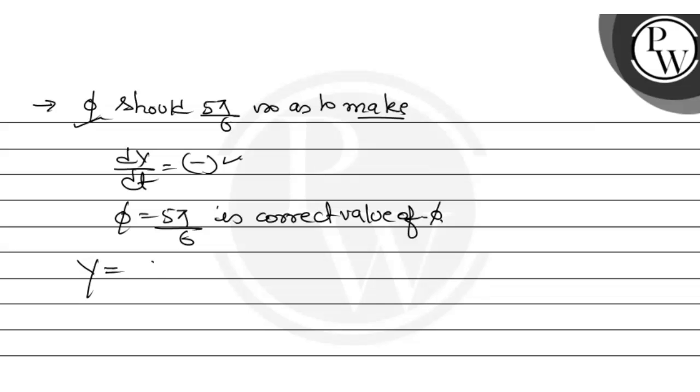Now we will make the general equation. Amplitude is 0.02 sine 2 pi by T into t minus 2 pi by lambda into x plus 5 pi by 6. This is our standard equation for transverse waves. I hope this solution is clear to you.